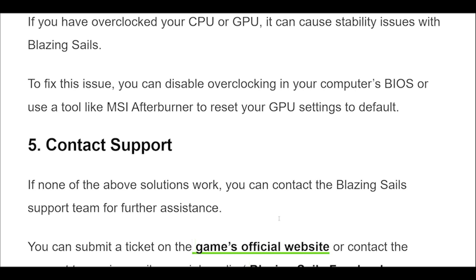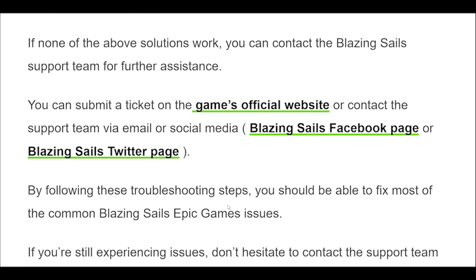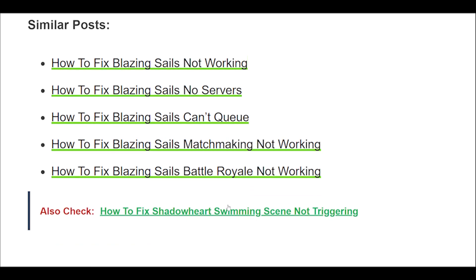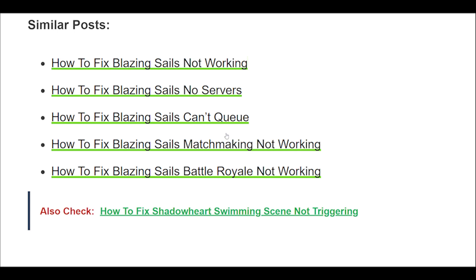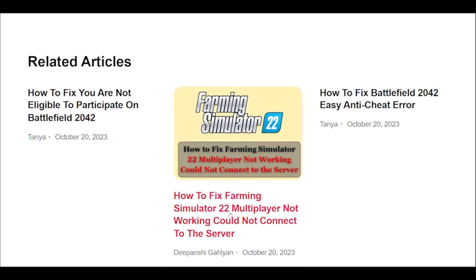5. If none of the above solutions work, you can contact the Blazing Sales support team for further assistance. You can submit a ticket on the game's official website or contact the support team via email or social media, such as the Blazing Sales Facebook page or Blazing Sales Twitter page. By following these troubleshooting steps, you should be able to fix most of the common Blazing Sales Epic Games issues. If you're still experiencing issues, don't hesitate to contact the support team for further assistance.